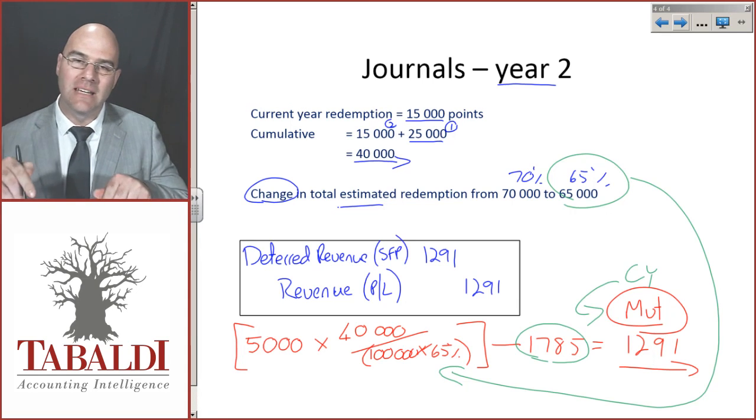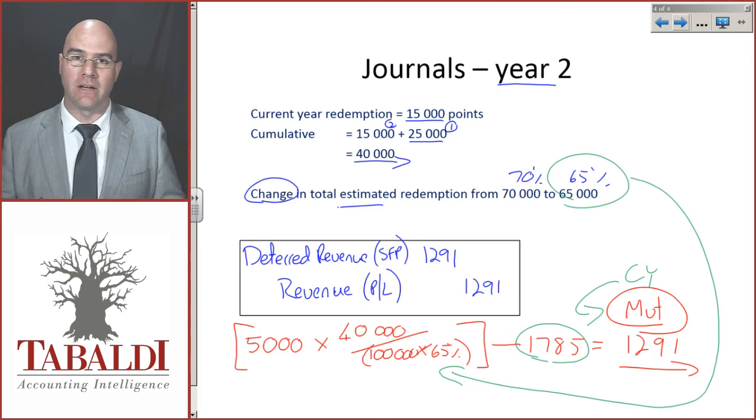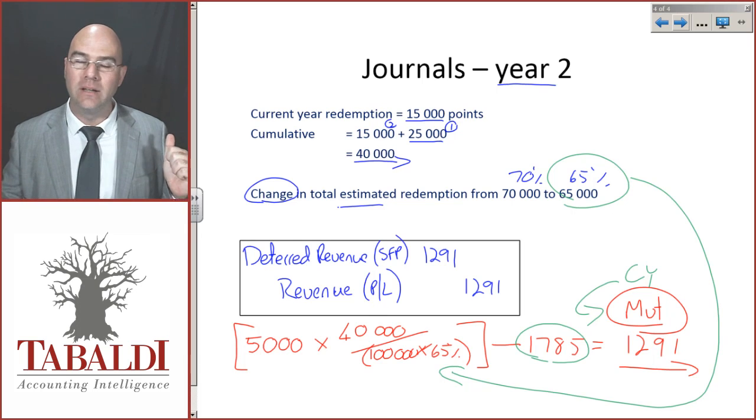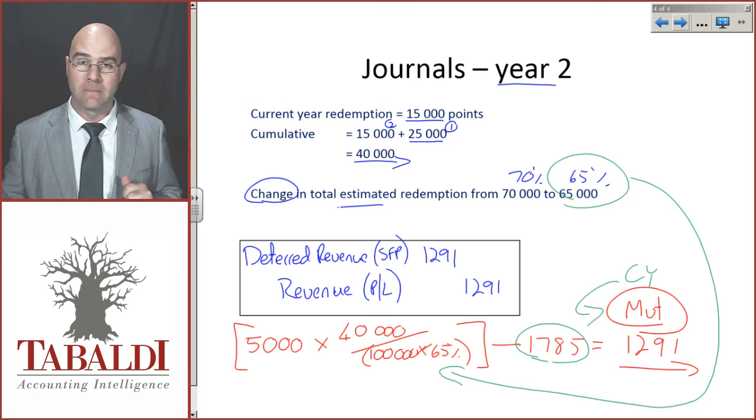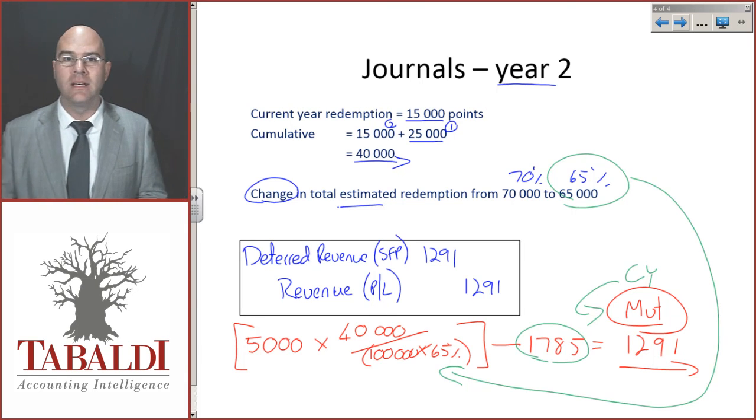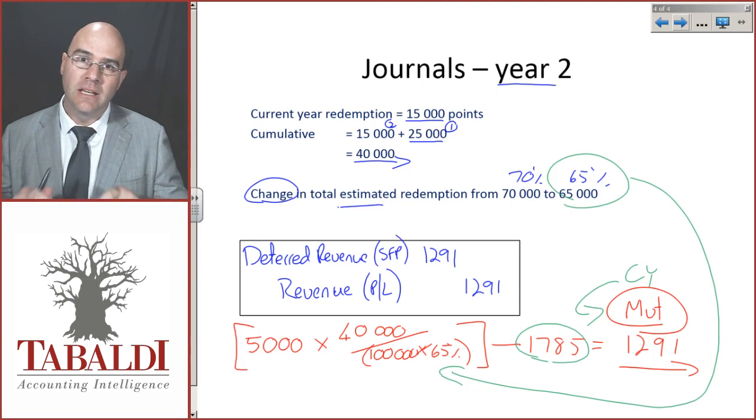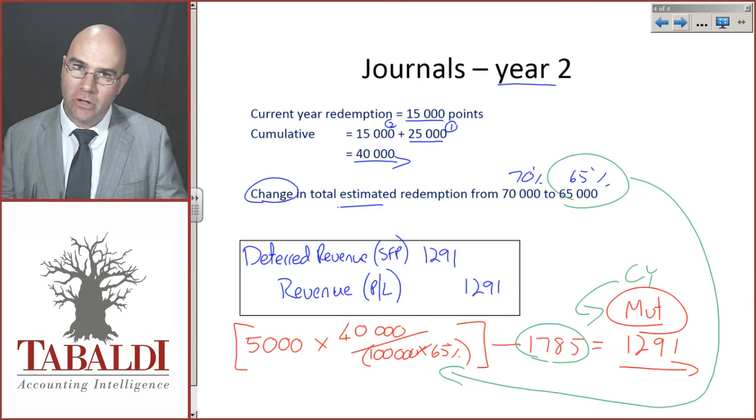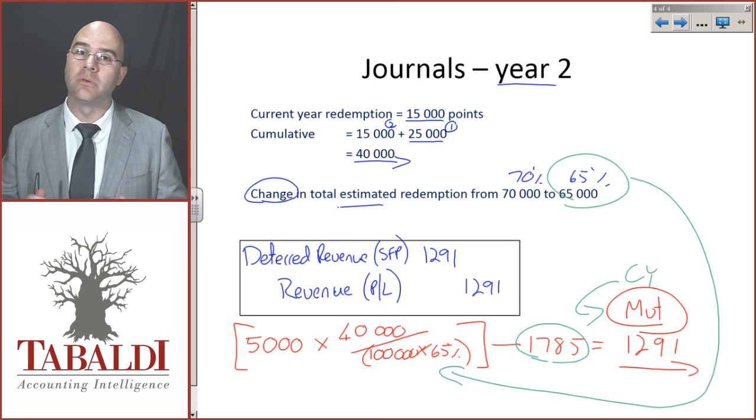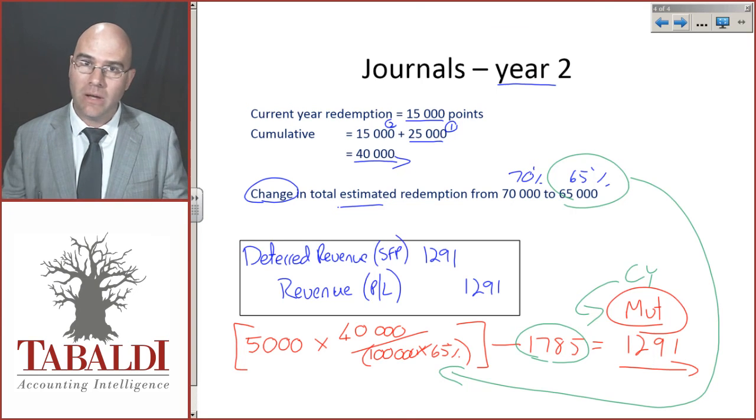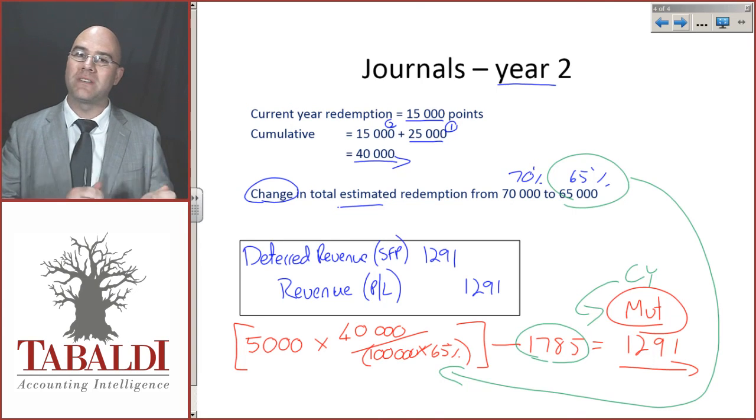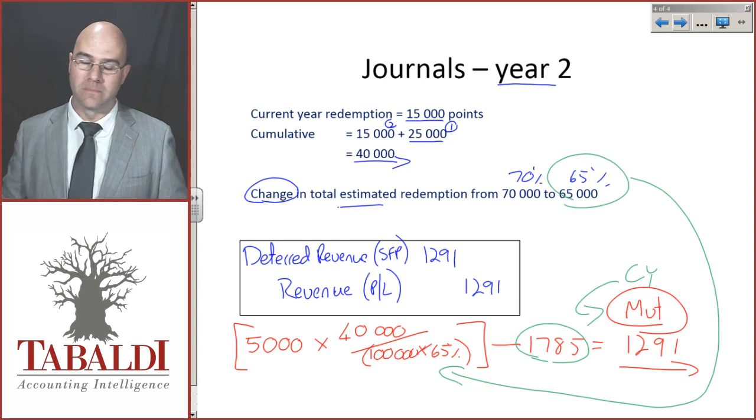I then deduct last year's balance to give me the current year movement. That incorporates the change in estimate into this current year. I don't go back to prior year, year 1, and restate that figure at all. This should give you some good guidance. Please do some examples. Do not lose the basic principles when dealing with IFRIC 13. This is still revenue, just being accounted for as a separate component of revenue. Thank you.